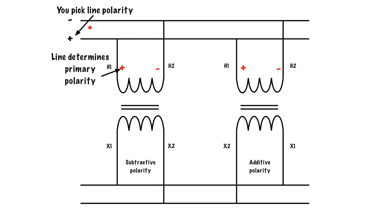So again, you pick the line polarity. The line polarity determines your primary polarity. And then your primary polarity determines what your secondary polarity is.